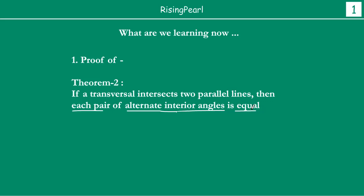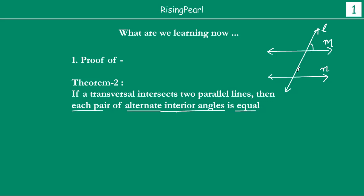In our last webisode we talked about parallel lines and transversals. If we draw two parallel lines — line M and line N — and draw a transversal, we get different kinds of angles. We saw there are corresponding angles, and we have four pairs of corresponding angles, each pair being equal. This was the most important axiom we learned in our last webisode.